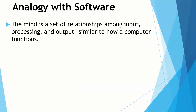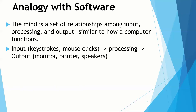The mind is a relationship among input, processing, and output — similar to how a computer functions. With a computer, we have input through keystrokes, mouse clicks, mouse movement, and voice-activated devices like an Echo or Google Home. Then you have processing — what's going on within the computer itself. And then output: what's showing up on your monitor, what's going to your printer, what's playing on your speakers. This various output according to the input and the processing.